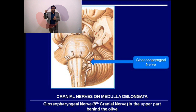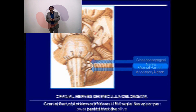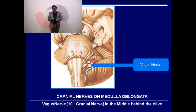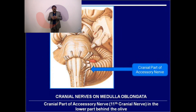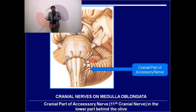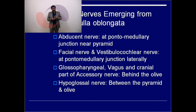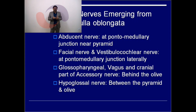Behind the olive, cranial nerves emerge from above downward: the glossopharyngeal nerve (CN IX), the vagus nerve (CN X), and the cranial part of the accessory nerve (CN XI). Between the olive and the pyramid emerges the hypoglossal nerve (CN XII), which supplies the muscles of the tongue.